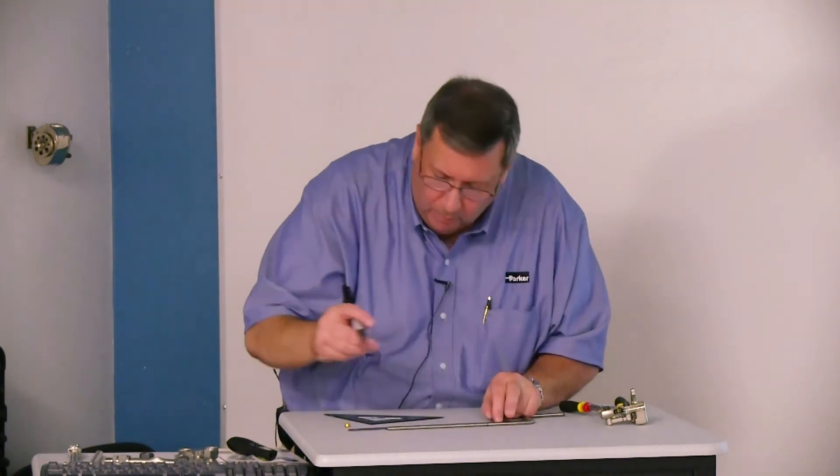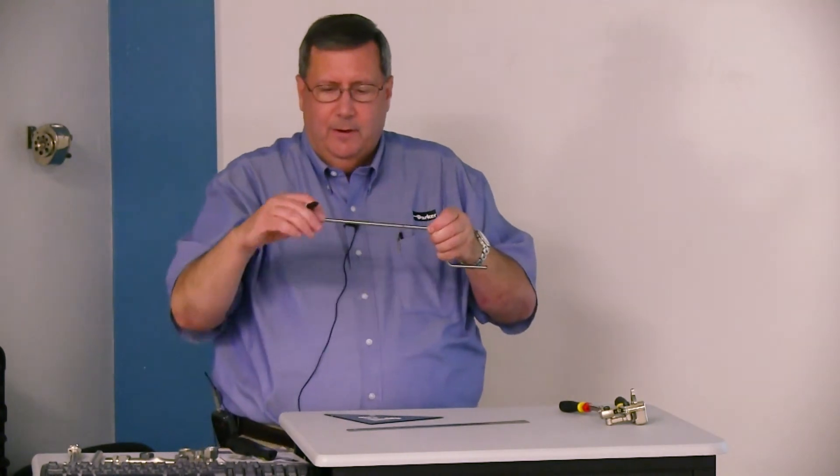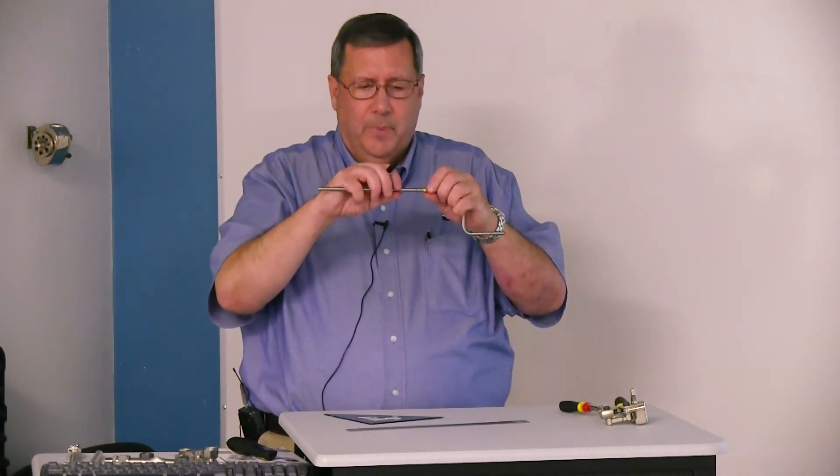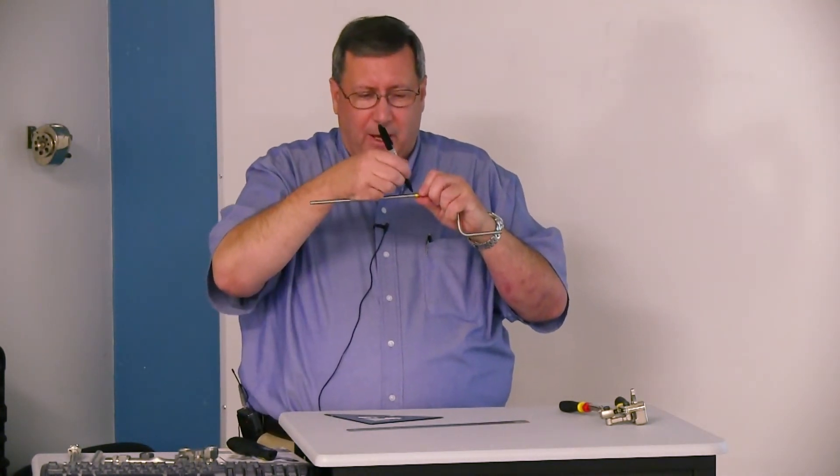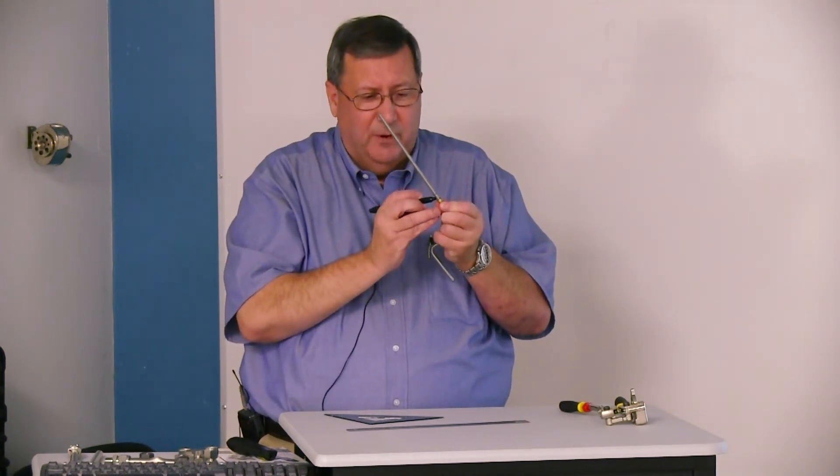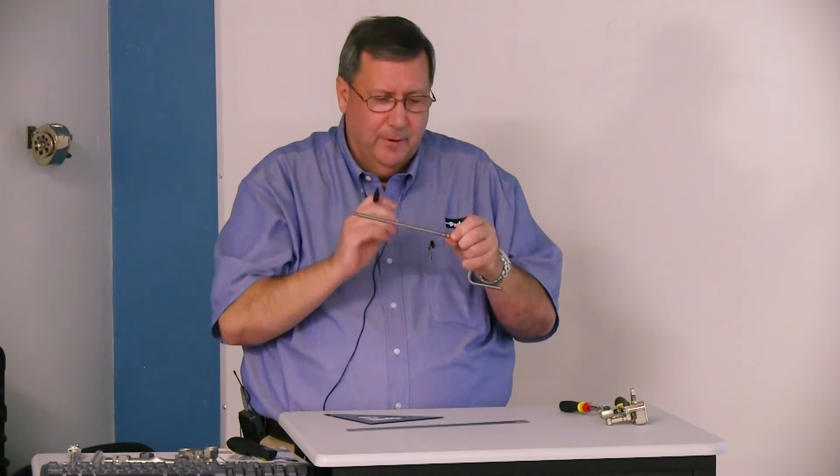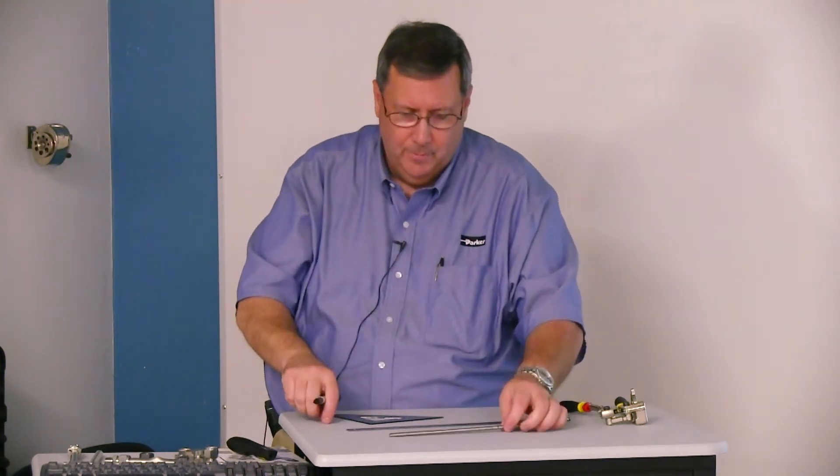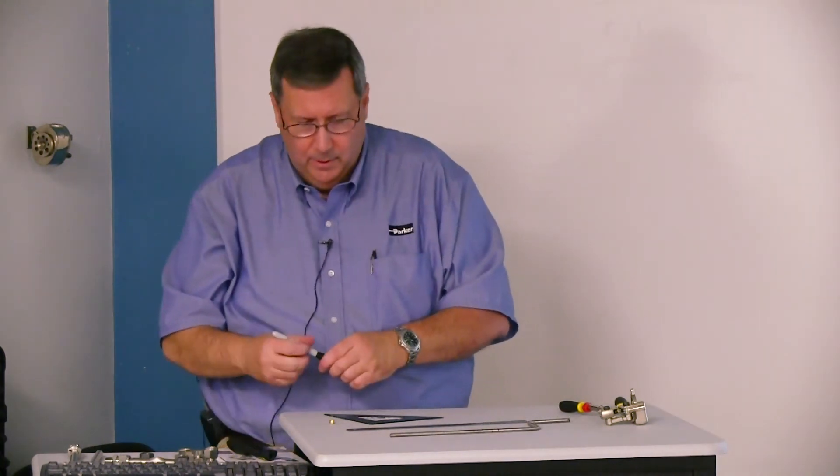Once you have that little mark on there, as before, take the ferrule, line it up with the mark, and we want to translate that mark all the way around the whole circumference of the tube.